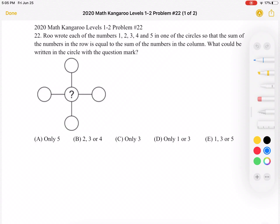This is the 2020 Math Kangaroo Levels 1-2, Problem Number 22. Roo wrote each of the numbers 1, 2, 3, 4, and 5 in one of the circles so that the sum of the numbers in the row is equal to the sum of the numbers in the column. What could be written in the circle with the question mark?